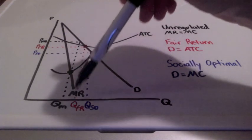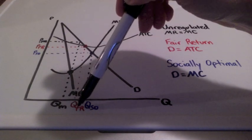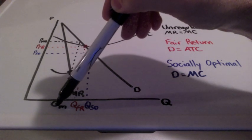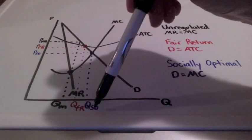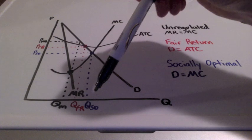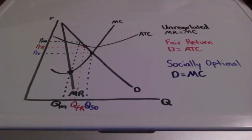And the fair return quantity is located between the unregulated quantity and the socially optimal quantity. This is the intersection which represents where total revenue equals total cost, and it's also referred to as a break even point for the firm.